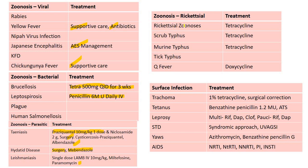Leishmaniasis: single-dose liposomal amphotericin B IV 10 mg per kilogram is the drug of choice; miltefosine and paromomycin are helpful. Rickettsial zoonosis, scrub typhus, murine typhus: tetracycline is drug of choice. Q fever: doxycycline. Trachoma: 1% tetracycline ointment locally; surgical correction of entropion. Tetanus: benzathine penicillin 1.2 million units; anti-tetanus serum to neutralize toxin. Leprosy — multibacillary: rifampicin, dapsone, and clofazimine; paucibacillary: rifampicin and dapsone. STDs: syndromic approach with color-coded tablets.